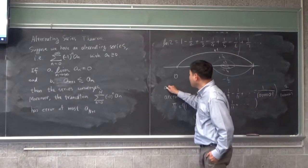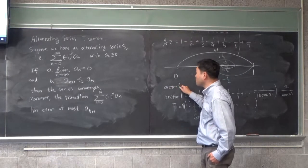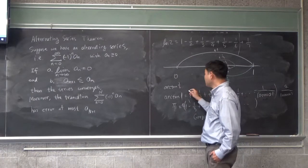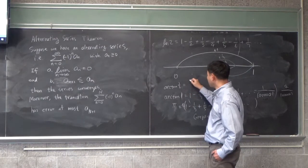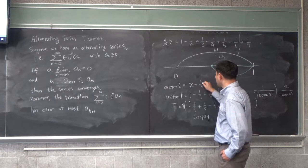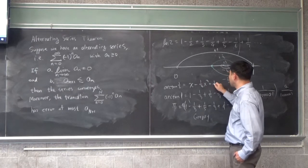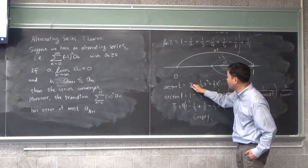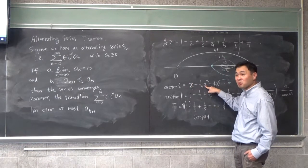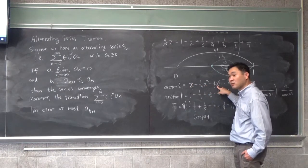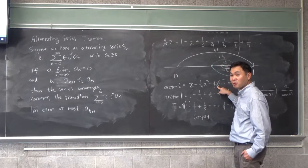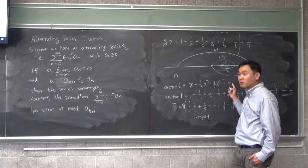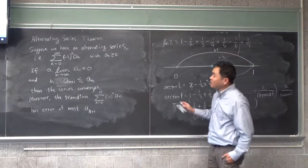On the other hand, the arctangent of one-half and one-third converges much faster. Why? Because when you have x minus one over three x cubed plus one-fifth x to the fifth, and you keep going like that, then when you plug in one-half here, one-half cubed becomes really small. One-half to the fifth becomes really, really small. So the error will be quite small.